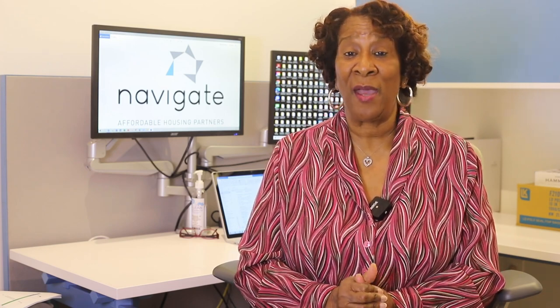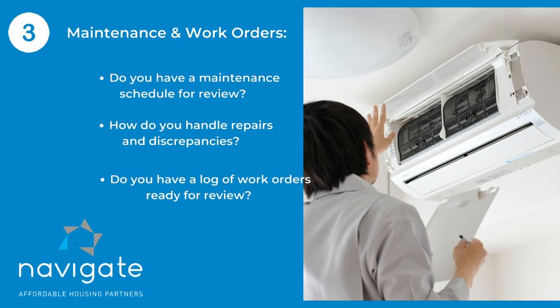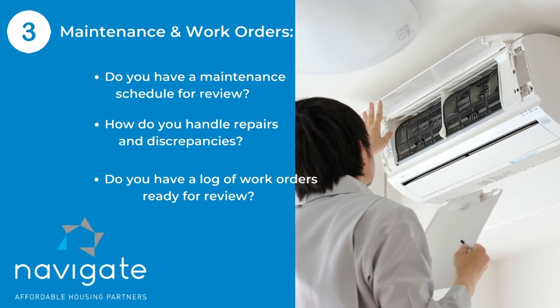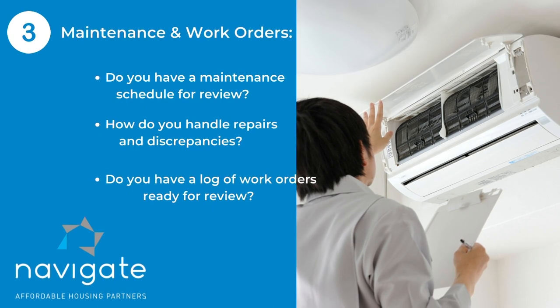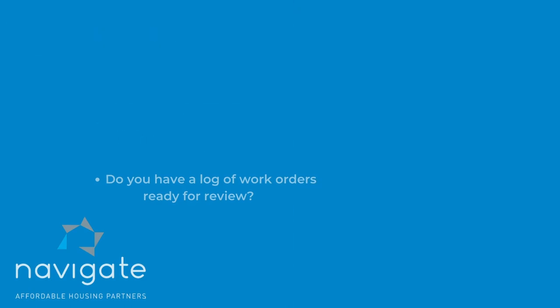The last thing we want to talk about is the maintenance and work orders. You need a maintenance schedule — you have to have one. The reviewer is going to ask you about it; he or she is going to ask you after you inspect the units how they are repaired and how you handle the discrepancies. That will be through a work order, so have a log of your work orders. All of this is a part of making a great score on an MOR.